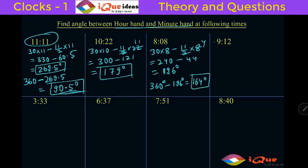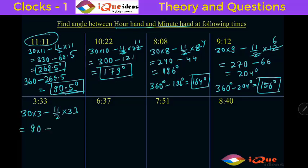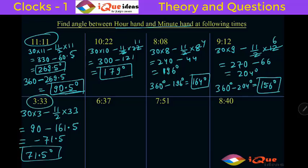For 9:12: 30 times 9 minus (11/2) times 12. Two cancels with 12 giving 6, so 270 minus 66 = 204 degrees. More than 180, so 360 minus 204 = 156 degrees is the answer. For 3:33: 30 times 3 minus (11/2) times 33 = 90 minus 181.5 = minus 71.5. This is a negative angle so the answer is 71.5 degrees — just remove the minus sign. The meeting between 3 and 4 happens around 3:16 to 3:17, and 3:33 is after that, so a negative result is expected.